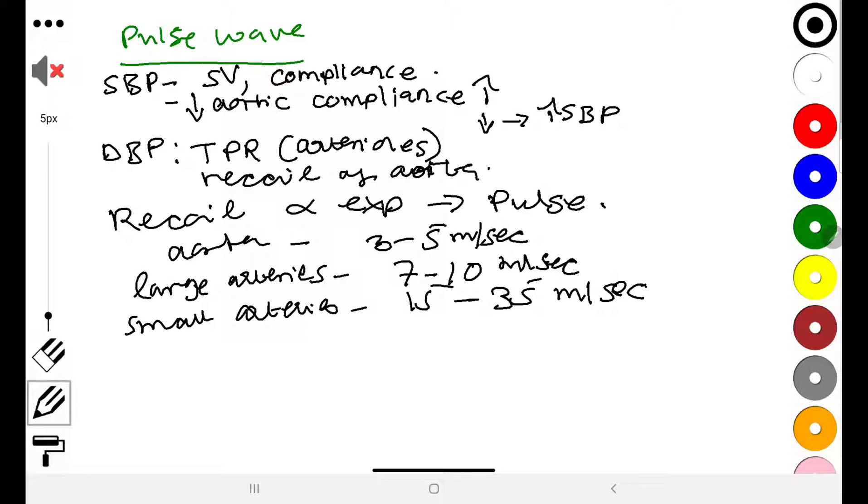We also note that there are several things that could increase pulse wave velocity, and these will include things such as age as well as smoking.